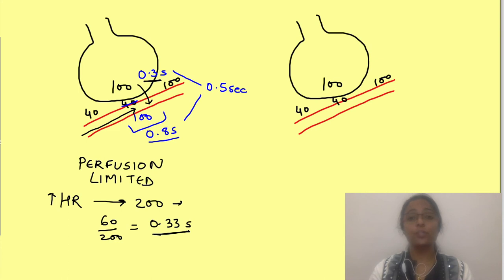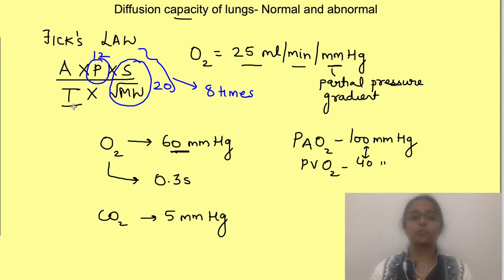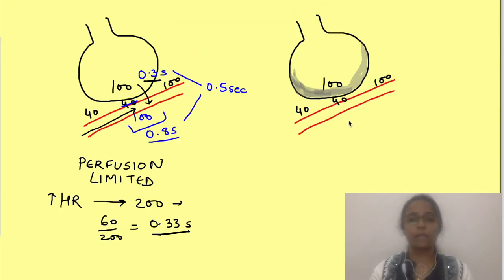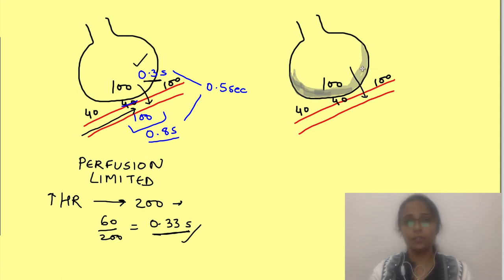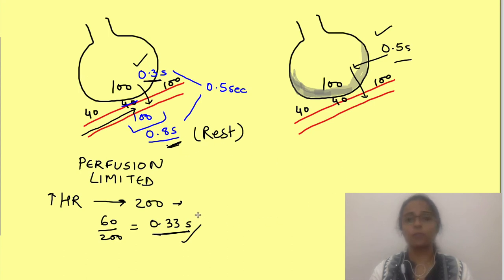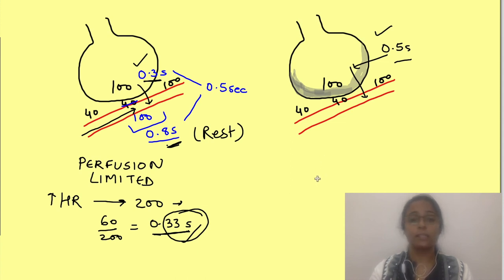Now consider a situation where the respiratory membrane thickens — for example, in pulmonary edema causing fluid collection in the interstitium and alveoli. Gases must cross a thicker membrane, and by Fick's law, the rate of diffusion is inversely proportional to membrane thickness, so diffusion capacity of the lungs for gases will decrease. We discussed that oxygen normally takes 0.3 seconds to equilibrate, sufficient even during exercise. But with increased membrane thickness, diffusion time may increase to 0.5 seconds. This is still adequate at rest (0.8 seconds available), but during activity when cardiac cycle duration decreases, there will not be adequate time for oxygen to equilibrate, causing hypoxia.